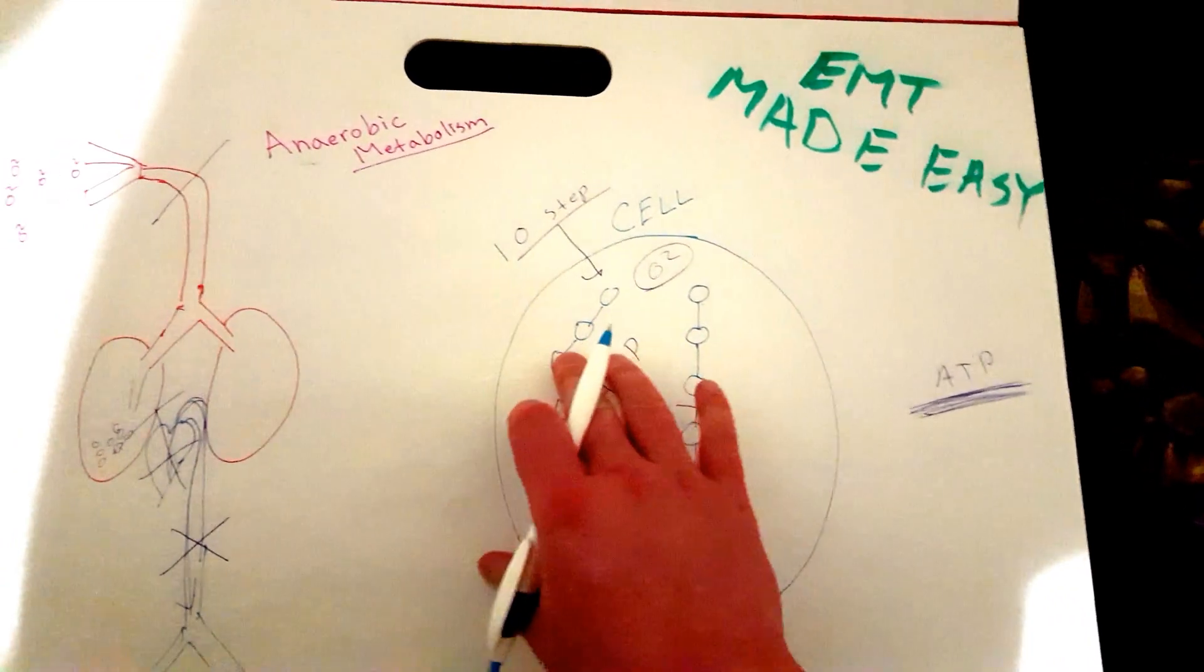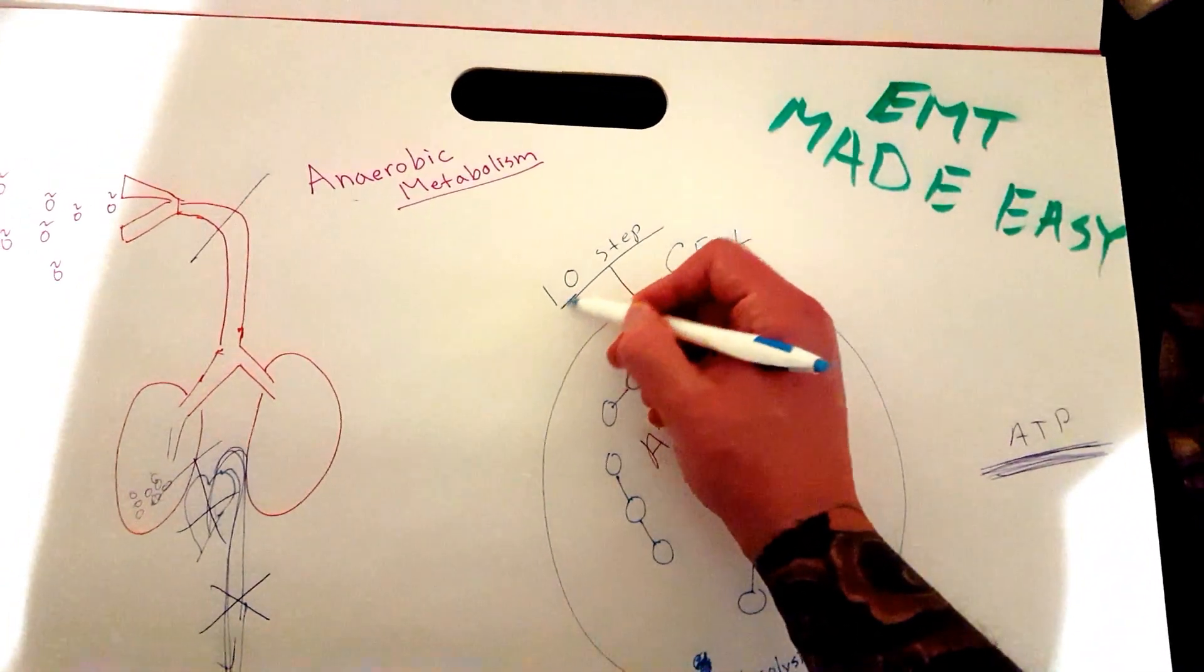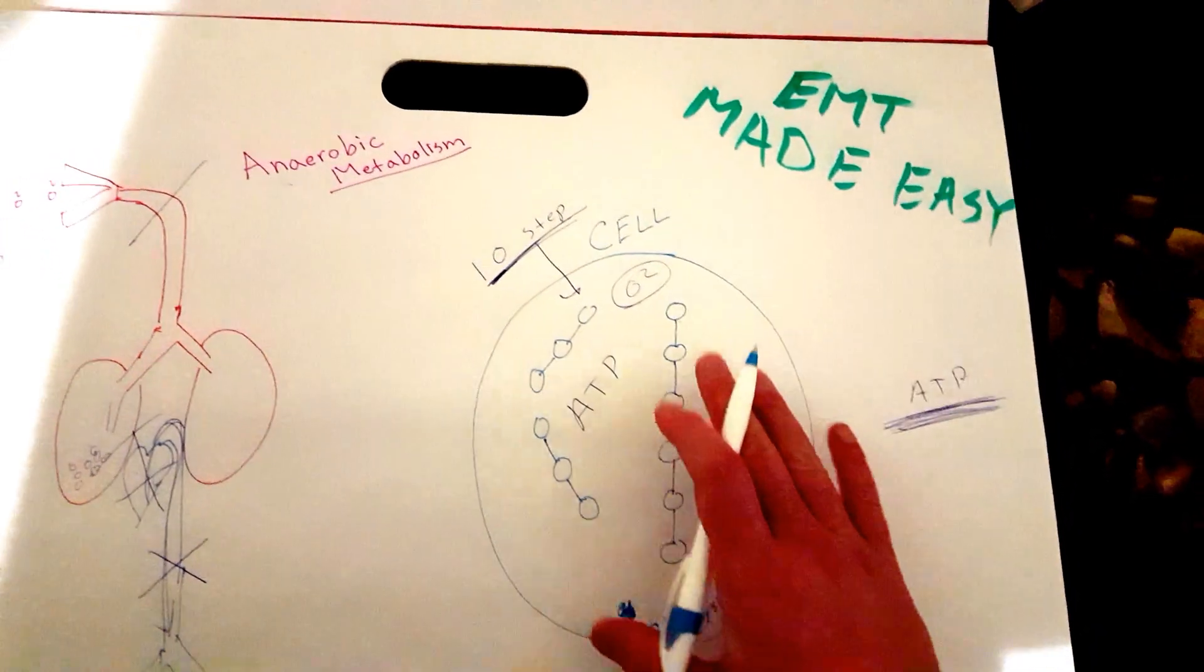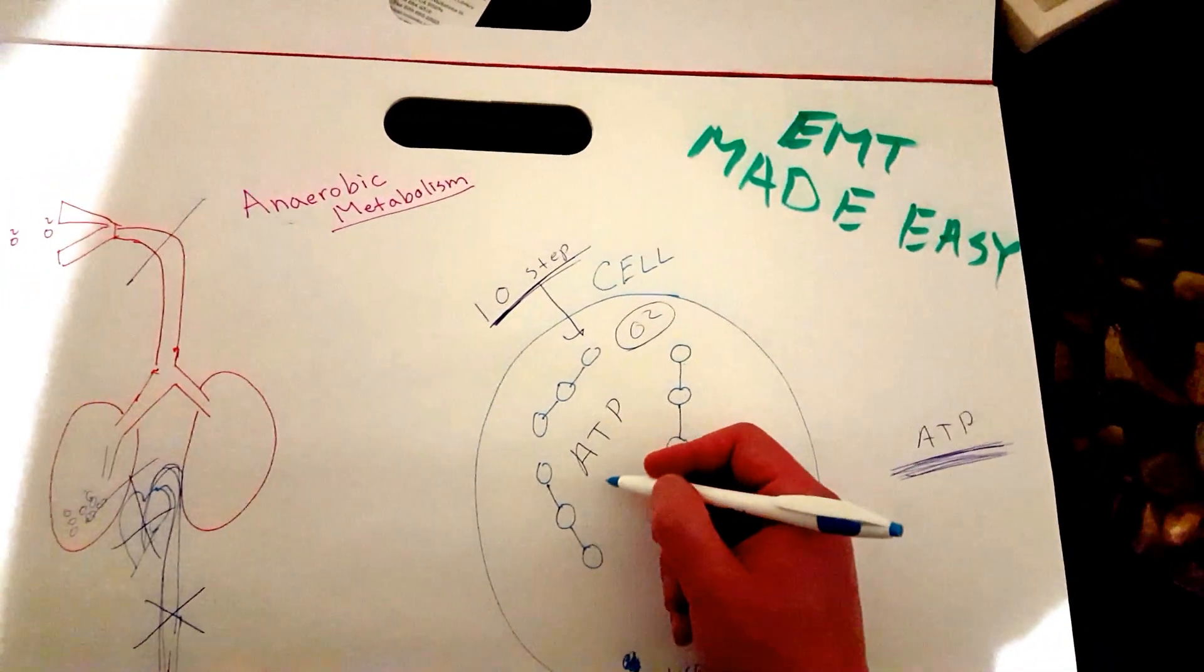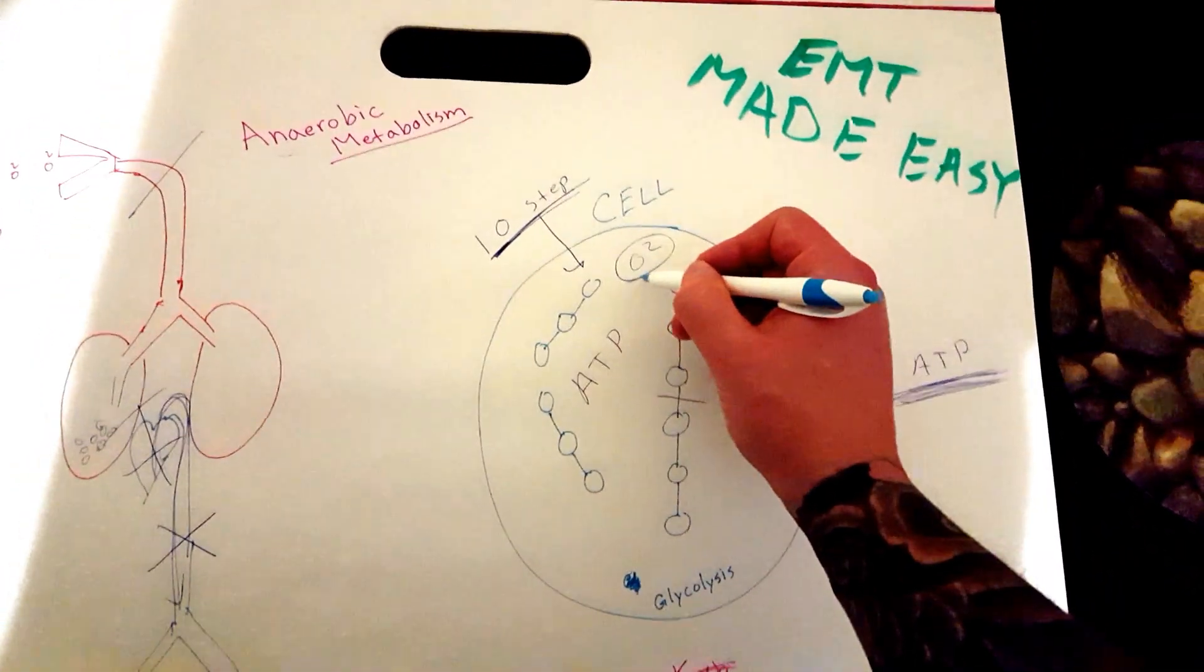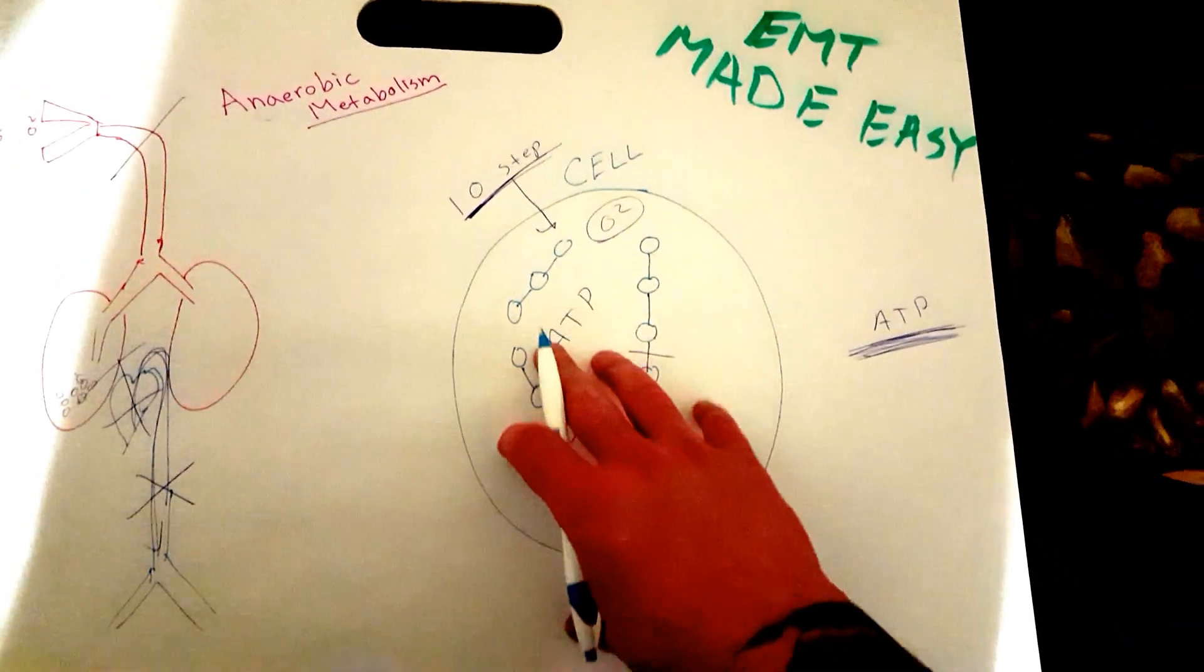Well, in this process, ATP is actually created. So you don't need oxygen in the mix to make ATP. However, this type of energy production, which is called anaerobic metabolism because ana means without—without oxygen—so you're making energy without oxygen, it's not efficient.